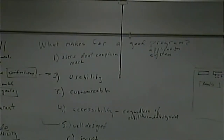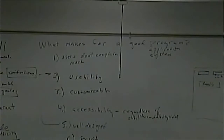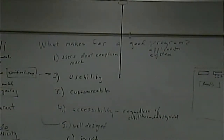If you have two pieces of code and one requires changes in three places when something changes, while the other requires changes in only one place — the better code is the one you only have to change in one place. Good programmers can anticipate this and take steps to eliminate duplicate code from happening. Writing programs with an eye towards maintainability is one of the top things you can do, and one of the things we're going to stress in this class.